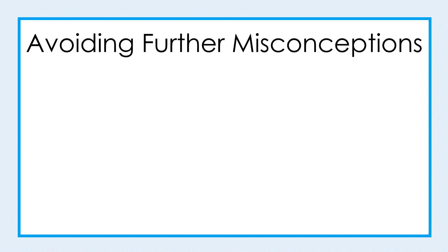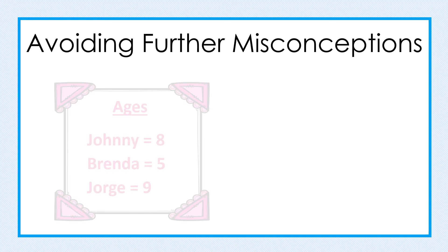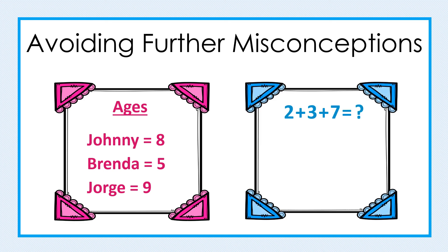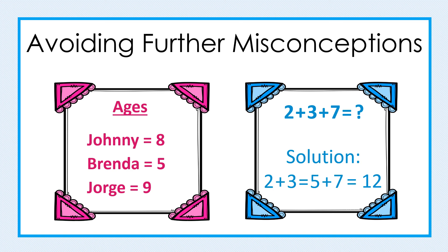For example, only use the equal sign in equations. The improper use shown here — writing 'Johnny = 8 years old' — is incorrect because this one person is not equal to 8. Similarly, while one box shows a student solving an equation step by step, their use of the equal sign is incorrect. If you look closely, it appears to say that 2 plus 3 is equal to 5 plus 7, which is not true.